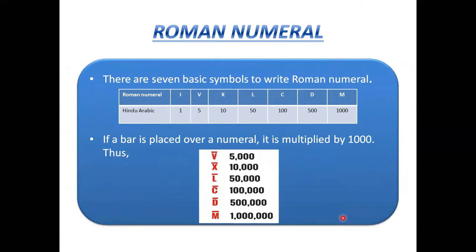The next topic is Roman numerals. There are seven basic symbols: I, V, X, L, C, D, M. Their Hindu Arabic values are: I=1, V=5, X=10, L=50, C=100, D=500, M=1000. If a bar is placed over a numeral, it is multiplied by 1000. So V-bar = 5,000, X-bar = 10,000, L-bar = 50,000, and so on.